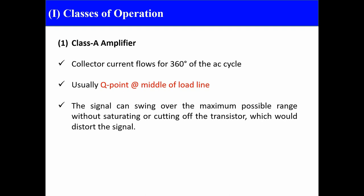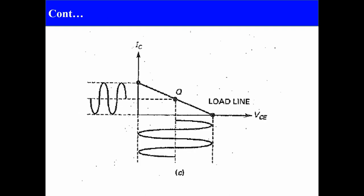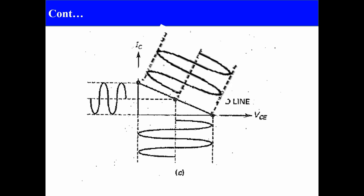In a Class A amplifier situation, if there is a small amplitude input signal, there is no distortion in the output. If the input is within the range between saturation point and cutoff point — meaning the peak-to-peak input is between the range of saturation and cutoff — we will not get any distortion in the output. The Q point is located at the middle of the load line.